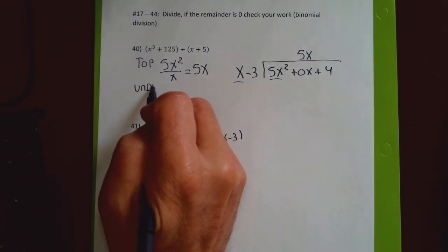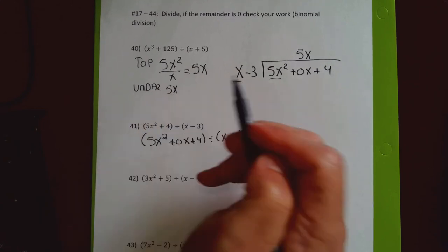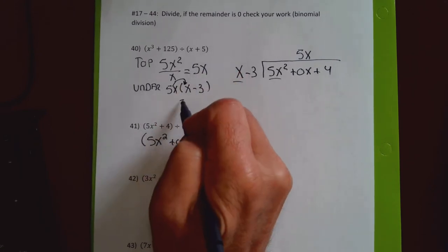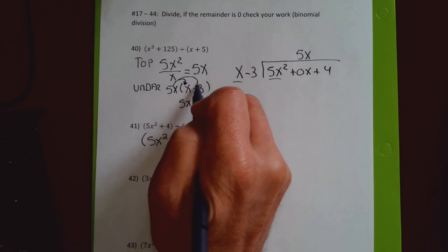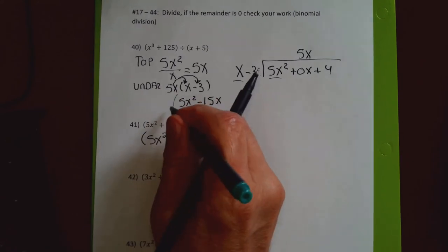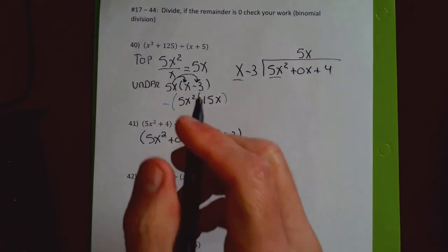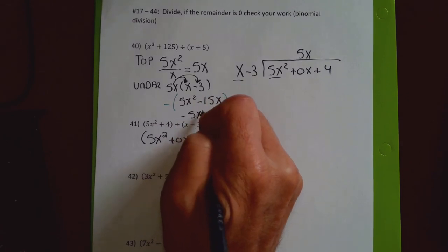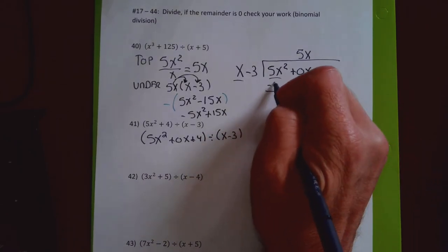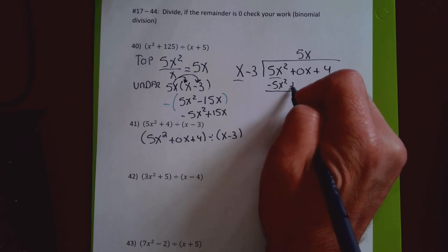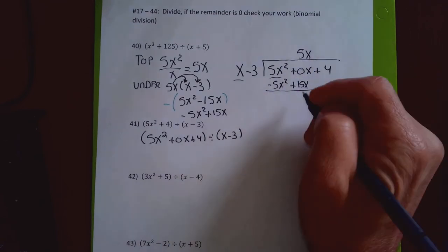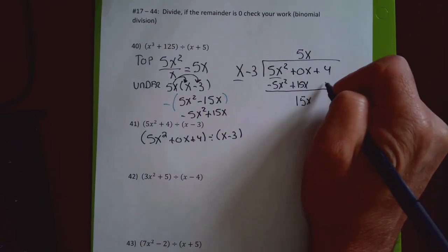The 5x on top gets multiplied by x minus 3: 5x times x is 5x squared, 5x times minus 3 is minus 15x. I find the opposite: negative 5x squared and positive 15x go under the division bar. The 5x squareds cancel; 0x plus 15x is 15x. I bring down the plus 4.